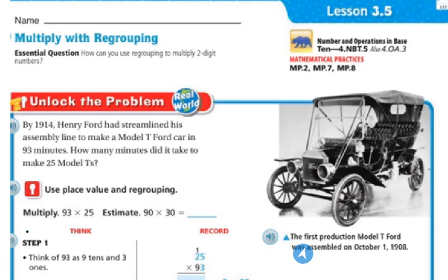So this right here is a Model T, and this was the first production Model T Ford, and it was assembled on October 1st, 1908. Almost 19 years ago. 111 years ago. That's crazy. Kind of cool.